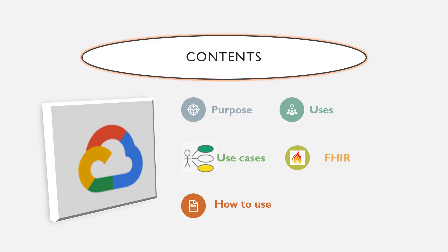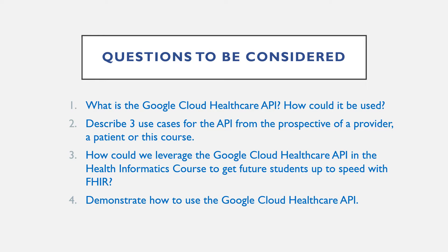The main points of our presentation are purpose, uses, use cases, FHIR, and how to use the Google Cloud Healthcare API. Here are the questions to be considered: what is the Google Cloud Healthcare API and how could it be used? Describe three use cases from the perspective of a provider, a patient, or this course. How could we leverage the Google Cloud Healthcare API in a health informatics course to get future students up to speed with FHIR? And finally, demonstrate how to use the Google Cloud Healthcare API.